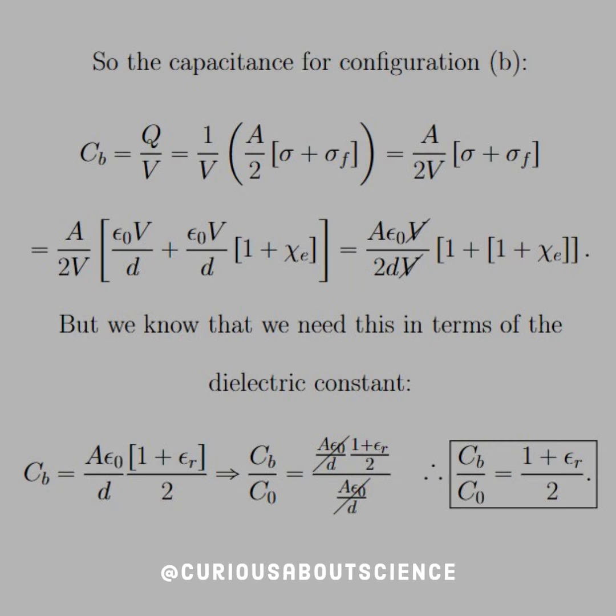So substituting in both of these charges, we see that we have a factor of epsilon naught V over d that can be pulled out. We note that the V's immediately cancel, and we're left with 1 plus chi e. But we know that we can write this in terms of the dielectric constant, and we know that the term in the innermost bracket is equal to epsilon r or the dielectric constant, so we just substitute that in, and we see that our capacitance is such.